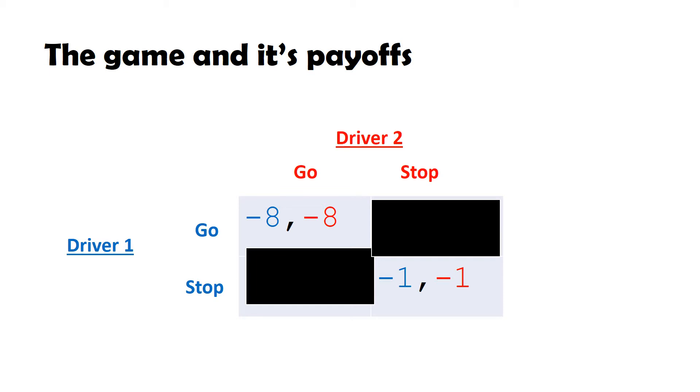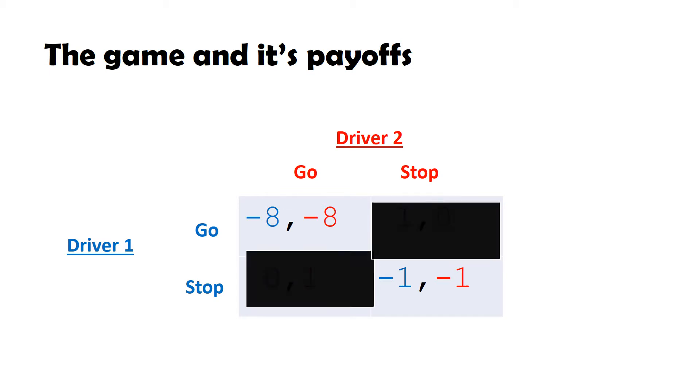If one goes and the other doesn't, then that driver that goes gains a utility of one, whilst the other driver is just neutral with zero utility.